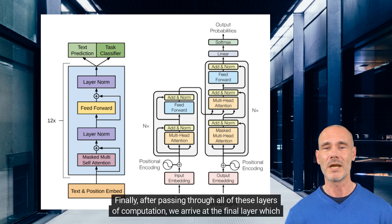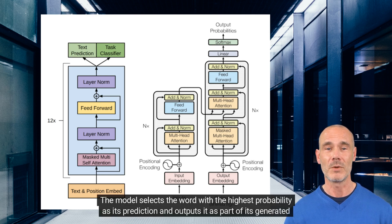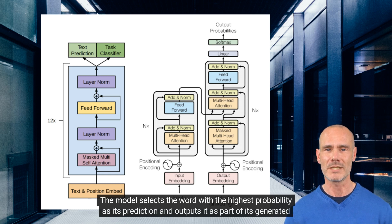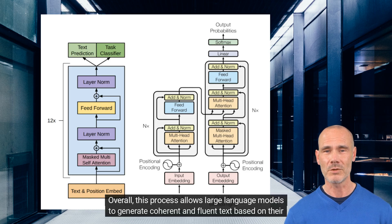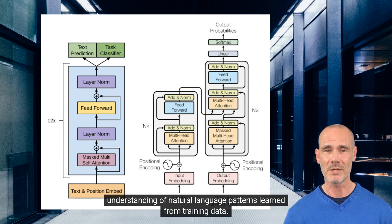Finally, after passing through all of these layers of computation, we arrive at the final layer which produces a probability distribution over all possible next words. The model selects the word with the highest probability as its prediction and outputs it as part of its generated text. Overall, this process allows large language models to generate coherent and fluent text based on their understanding of natural language patterns learned from training data.